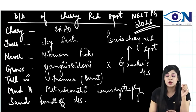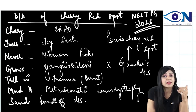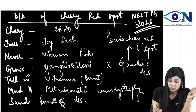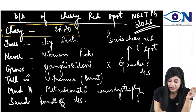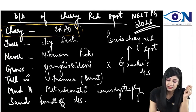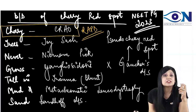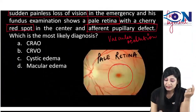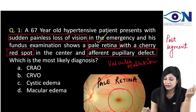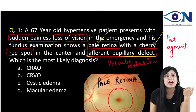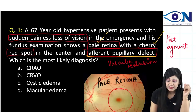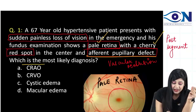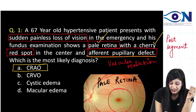Out of all the options, we can have the cherry red spot in multiple conditions, but there is only one place where we can also have the afferent pupillary defect. That is CRAO, where we can get the RAPD as well, because it is an optic nerve disease. With the combination of pale retina, cherry red spot, and afferent pupillary defect, the answer can be none other than CRAO.